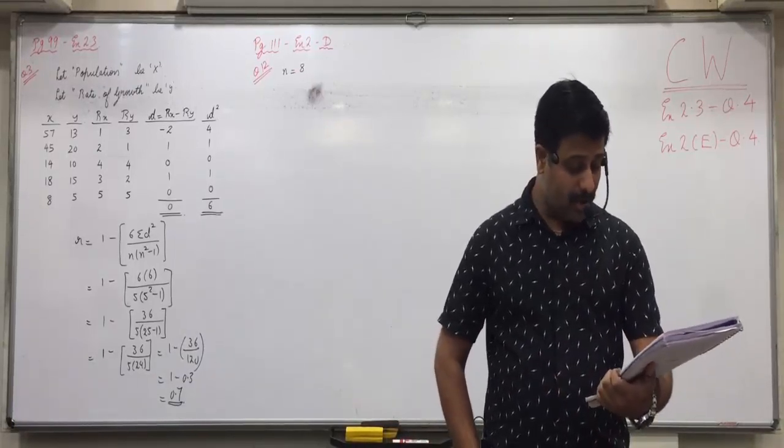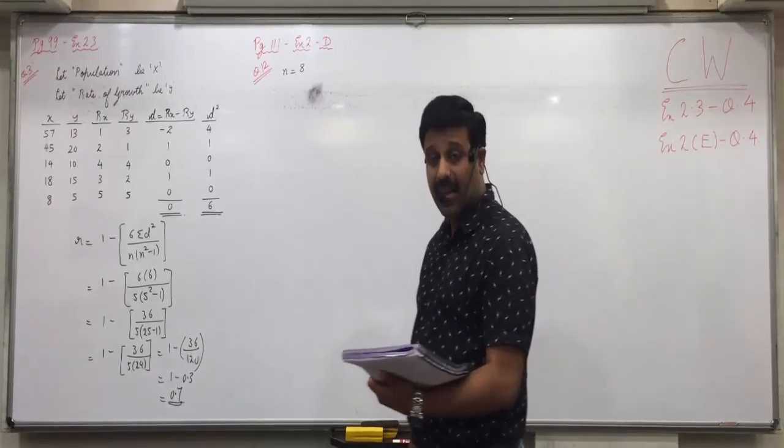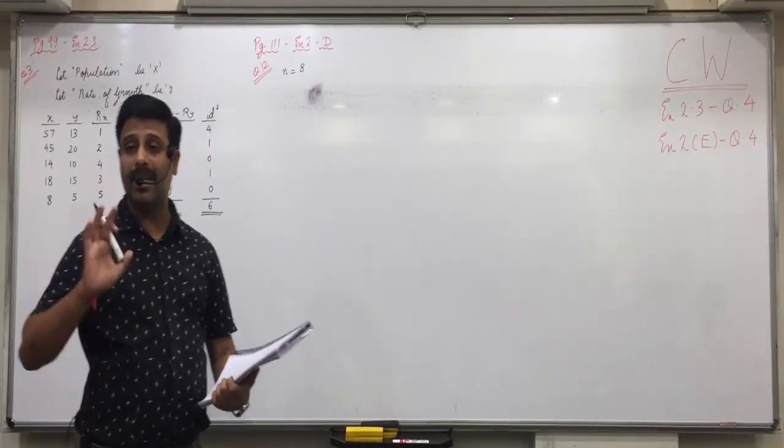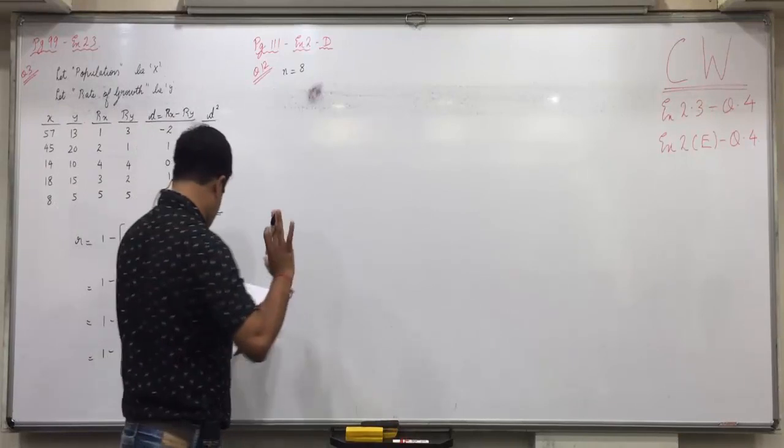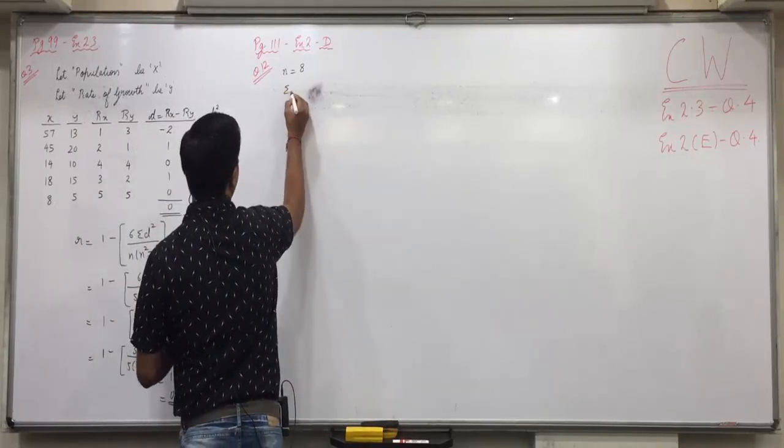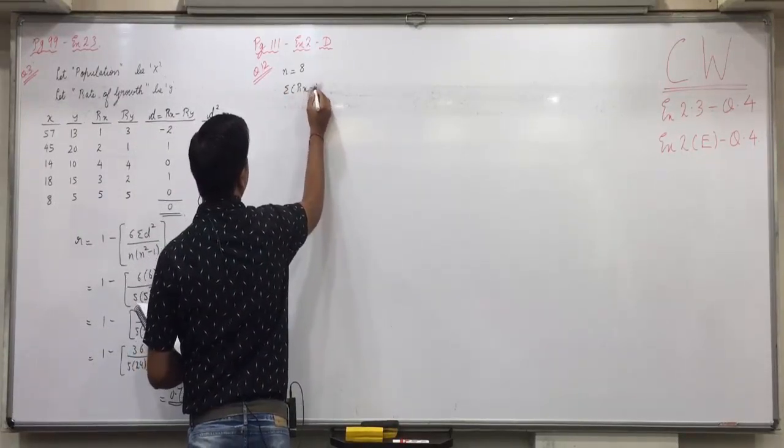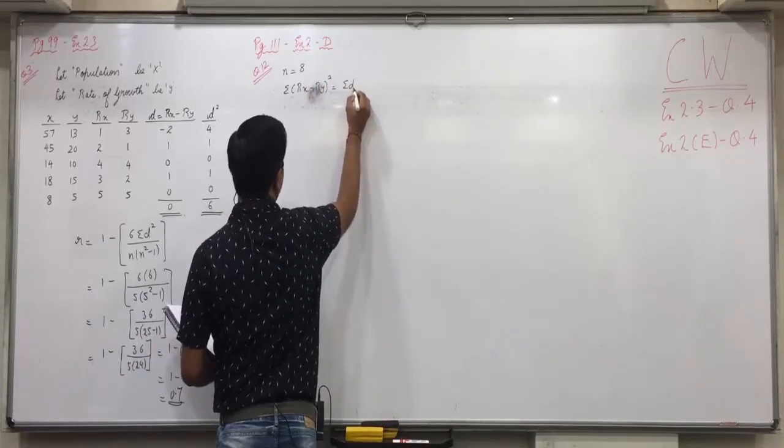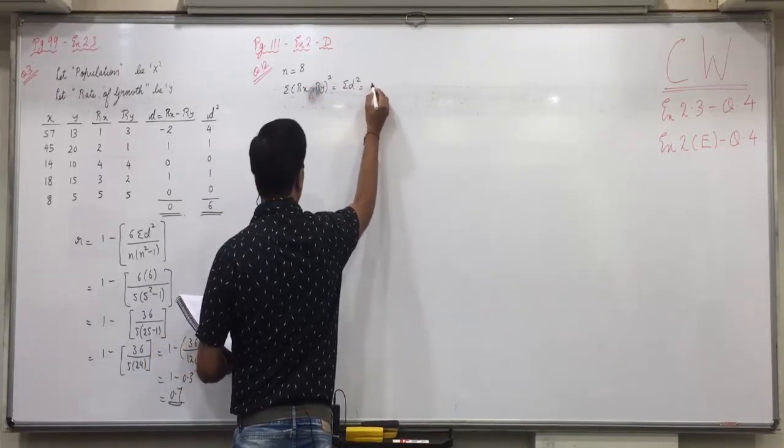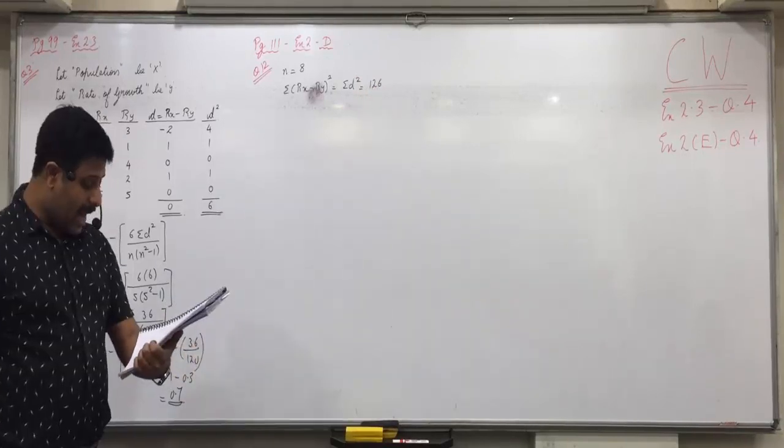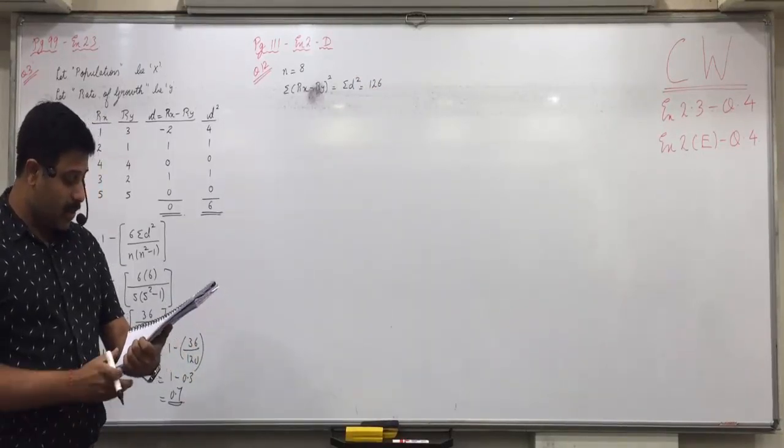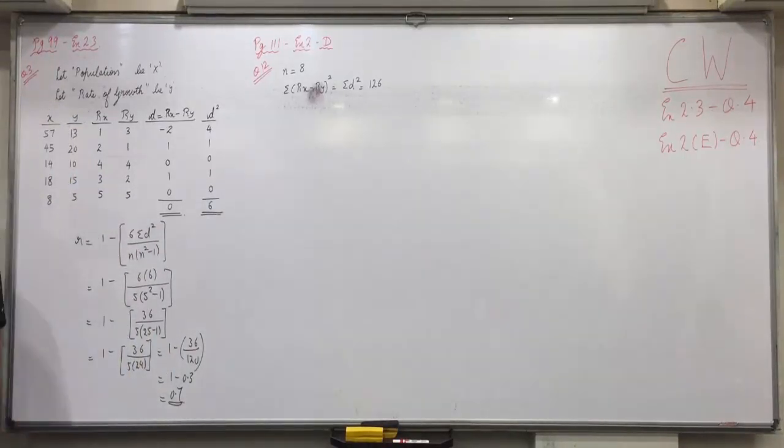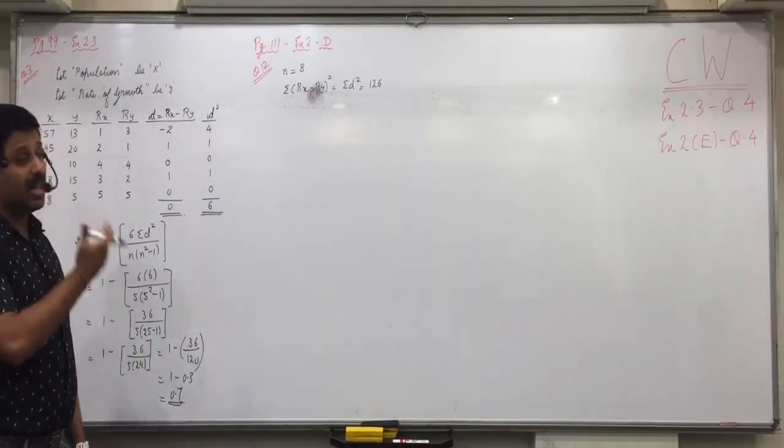Now raise your hand. What do you mean by sigma rx minus ry whole square? D square. Raise your hand. When I ask to raise your hand, raise your hands only. Sigma rx minus ry whole square means sigma d square, that is 126. Now where rx and ry are the ranks given to a contestant by the 2 judges respectively, find the spearman's rank correlation coefficient. Only formula has to be applied.